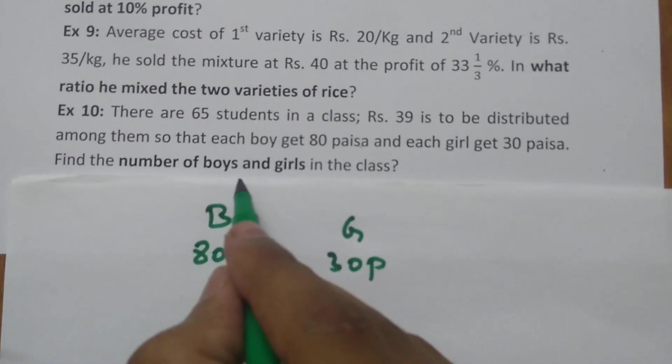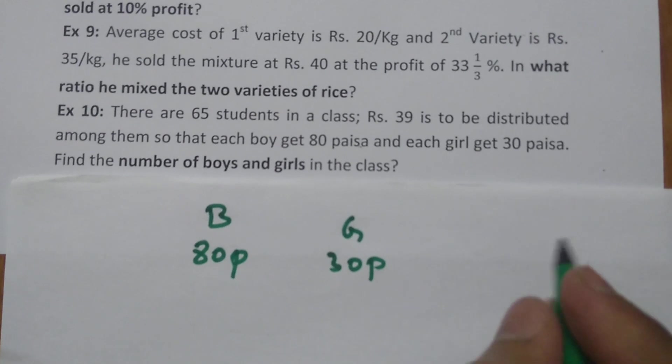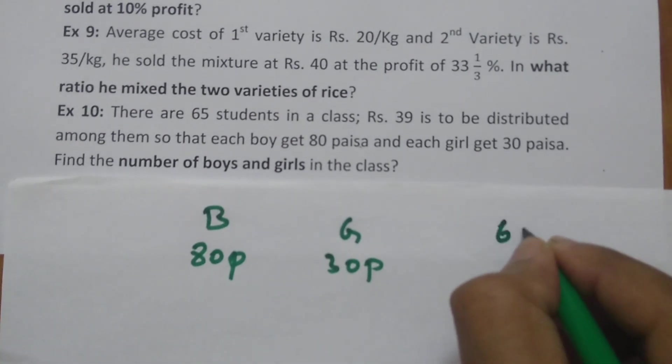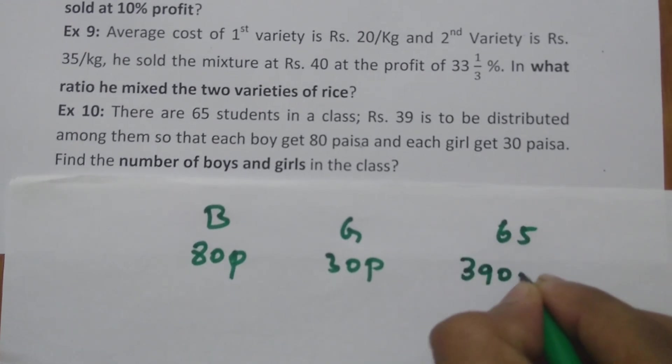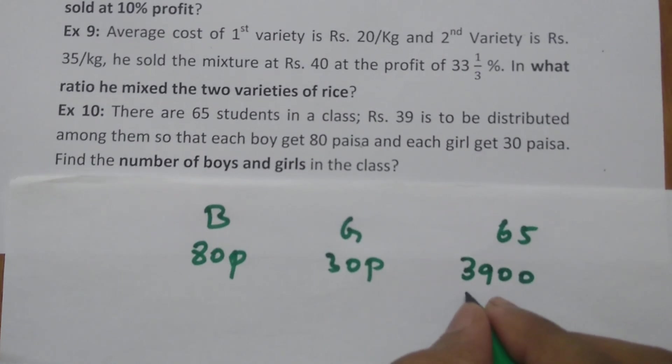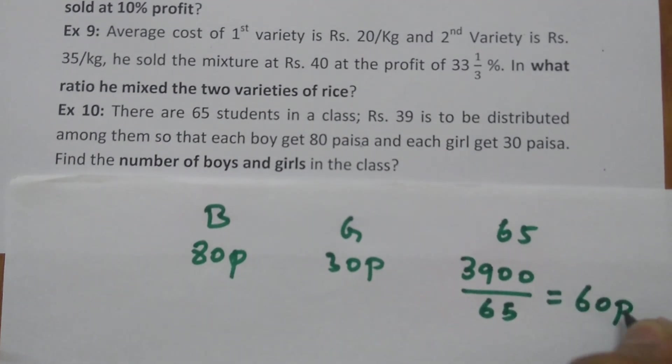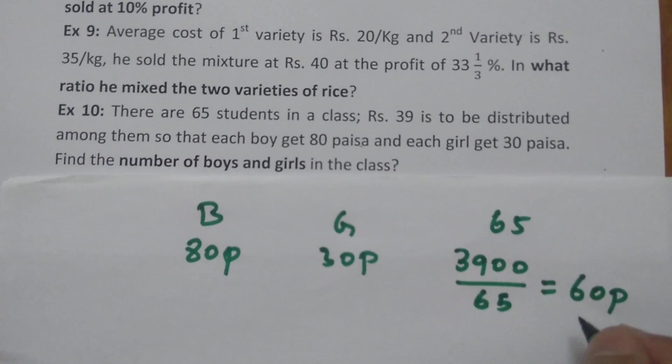You have 39 rupees to distribute to 65 students, and you have to find the number of boys and girls in the class. So 39 rupees means 3900 paisa. 3900 paisa divided by 65 students gives you 60 paisa. So the average amount to distribute is 60 paisa.